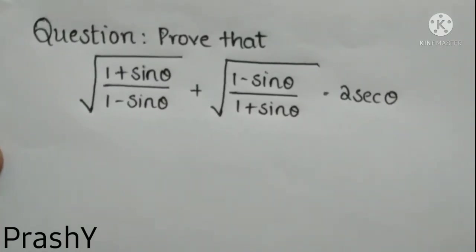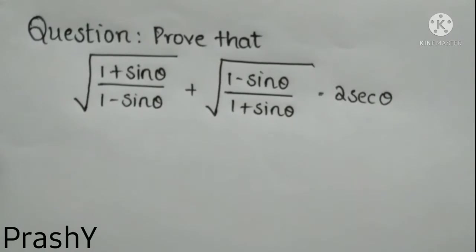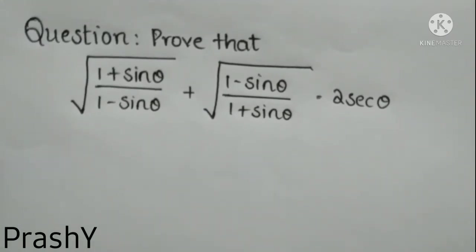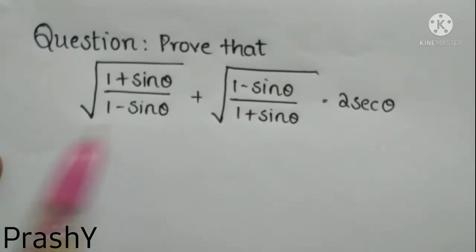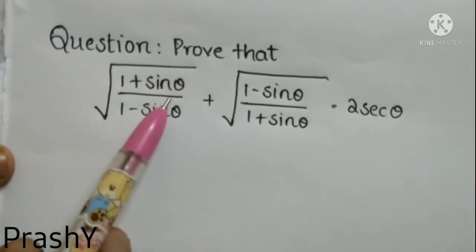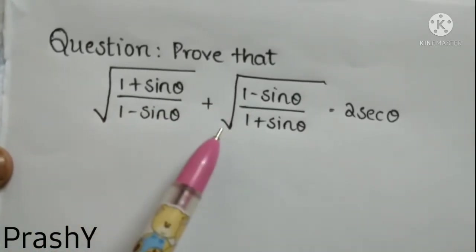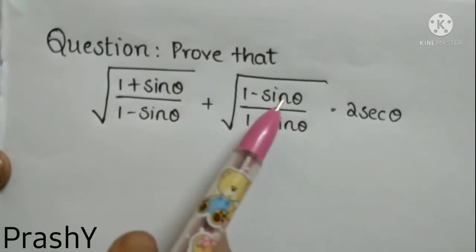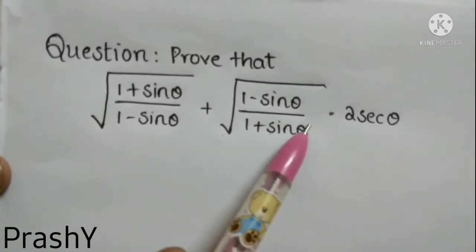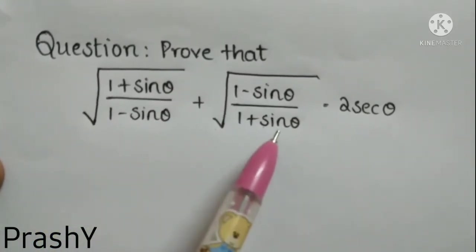Welcome back to our channel. Rush Learning is Fun. Today we have a question from mathematics under the topic trigonometry. Here is the question: prove that root over (1 + sin θ)/(1 − sin θ) plus root over (1 − sin θ)/(1 + sin θ) is equal to 2 secant θ.